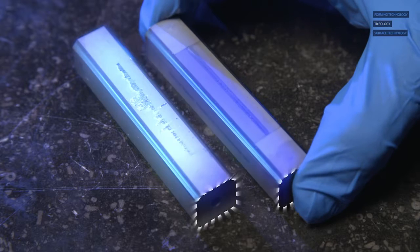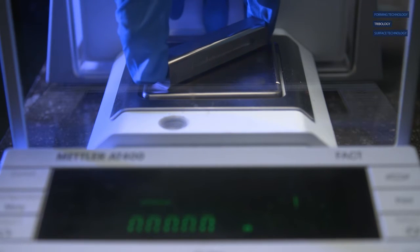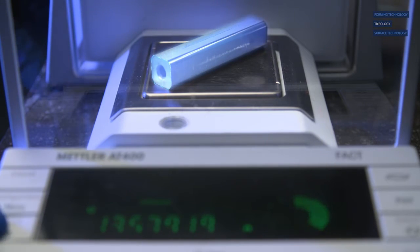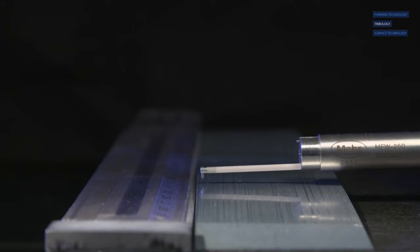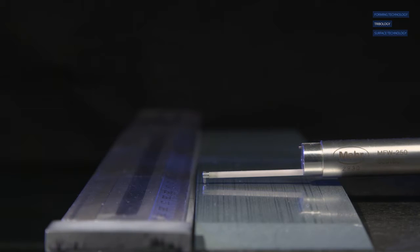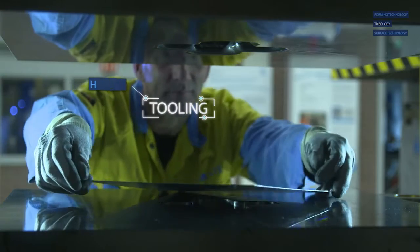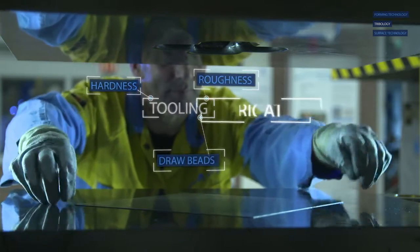After the test procedure, we precisely determine the influence on tool pollution of different material, coating and lubricant conditions by weighing the friction tools and quantifying the depth of the scratches on the sheet metal. We know which parameters influence the generation of tool pollution in the press shop.